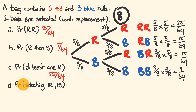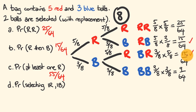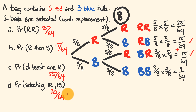For one red and one blue in any order, there are two outcomes: red then blue, or blue then red. Adding them: 15/64 + 15/64 = 30/64. This simplifies — dividing both top and bottom by 2 — to 15/32.